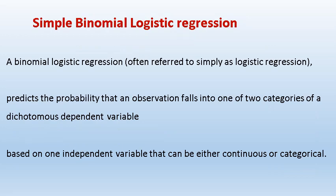Simple Binomial Logistic Regression, otherwise known as Simple Logistic Regression, predicts the probability that an observation falls into one of two categories of a dichotomous dependent variable based on one independent variable that can be either continuous or categorical. The outcome or dependent variable is dichotomous, binary, or binomial — that's why it's called binomial logistic regression. In this example, our independent variable is categorical.